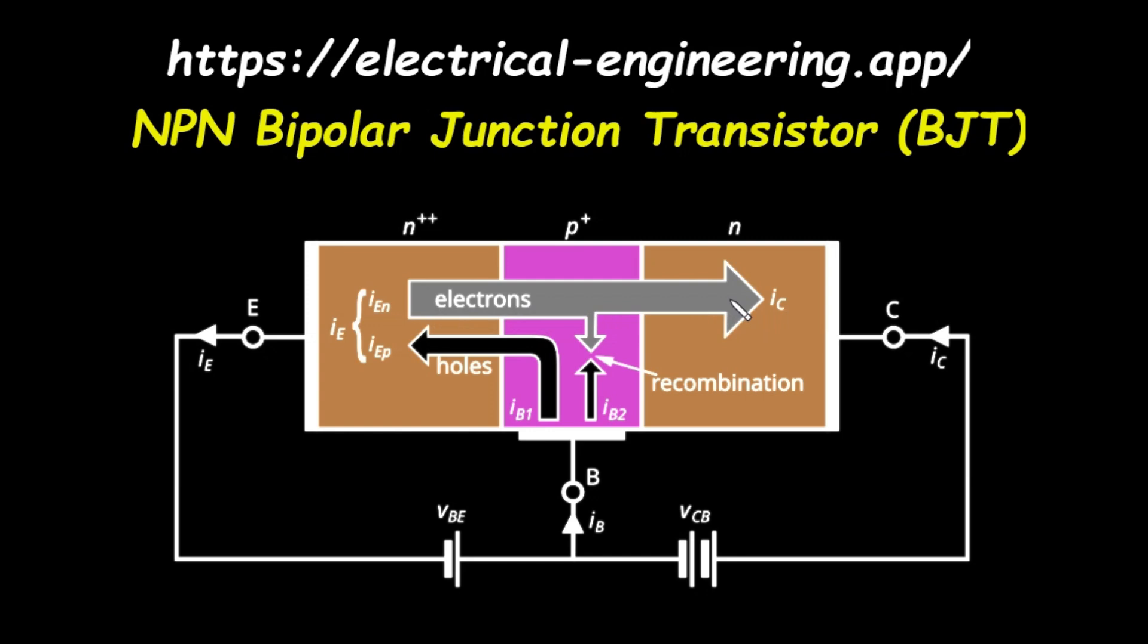So, what about the base current, I_B? The diagram shows that this small current is actually made of two separate components, which we'll call I_B1 and I_B2. Let's look at I_B1 first. This current is directly related to the holes that were injected from the base back into the emitter. For every hole that leaves the base and enters the emitter, a new hole must be supplied to the base from the external circuit to replace it. This flow of replacement holes into the base terminal is the current I_B1. So, I_B1 is equal in magnitude to the hole current I_EP.